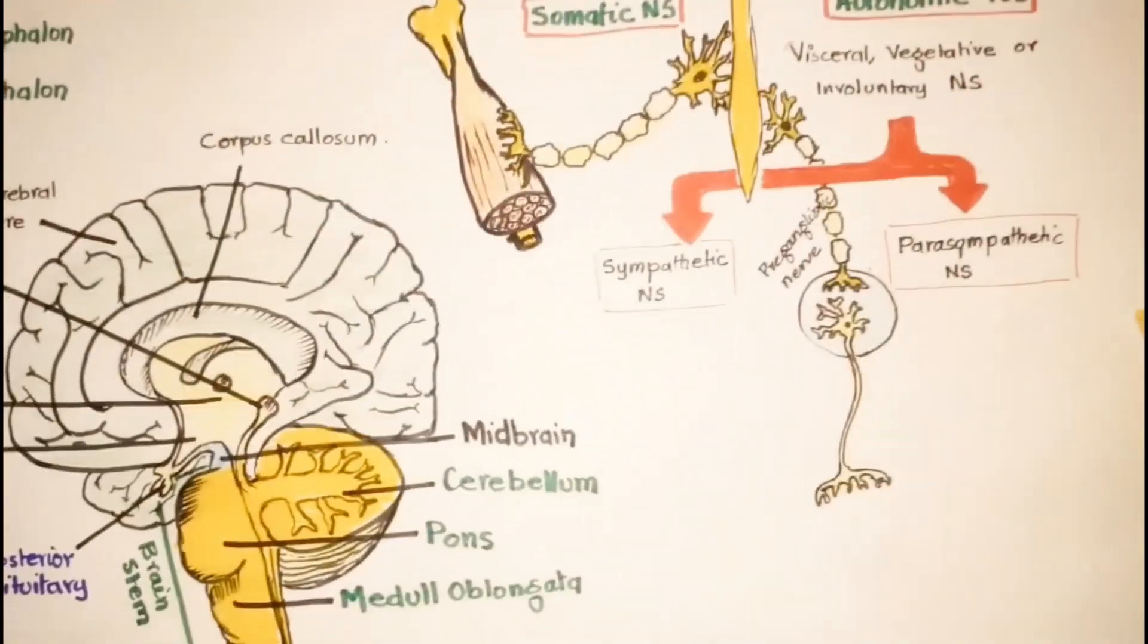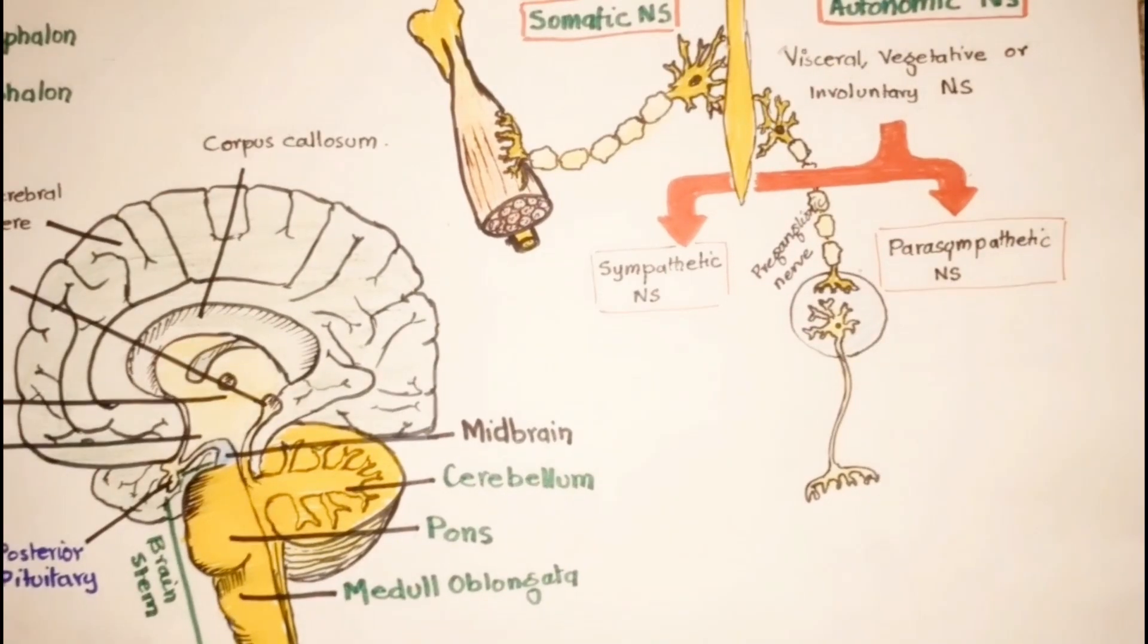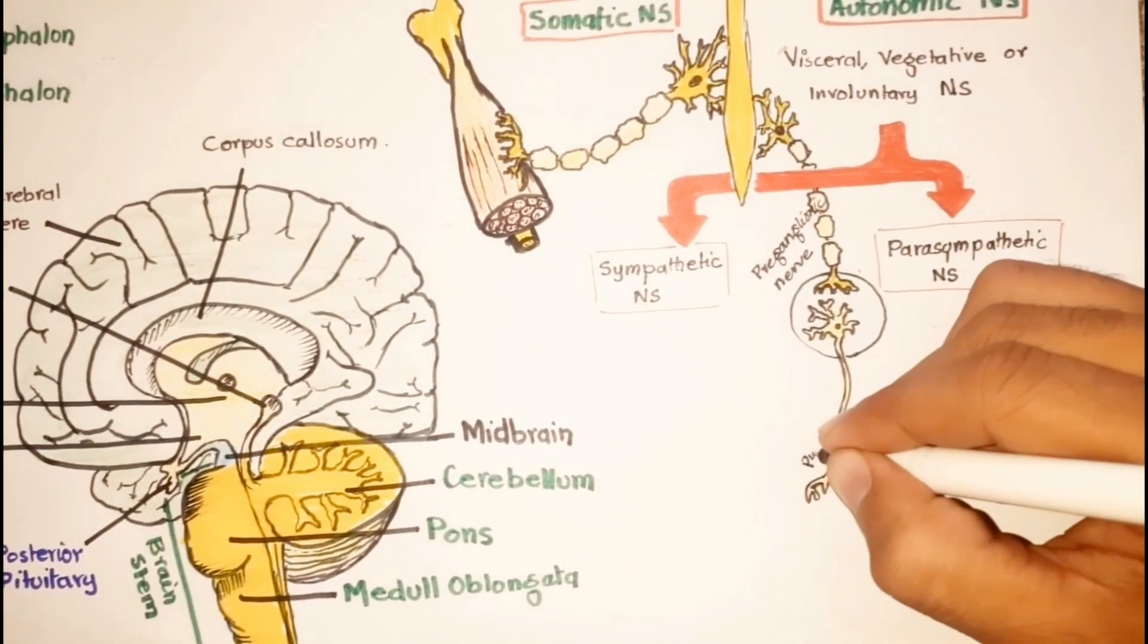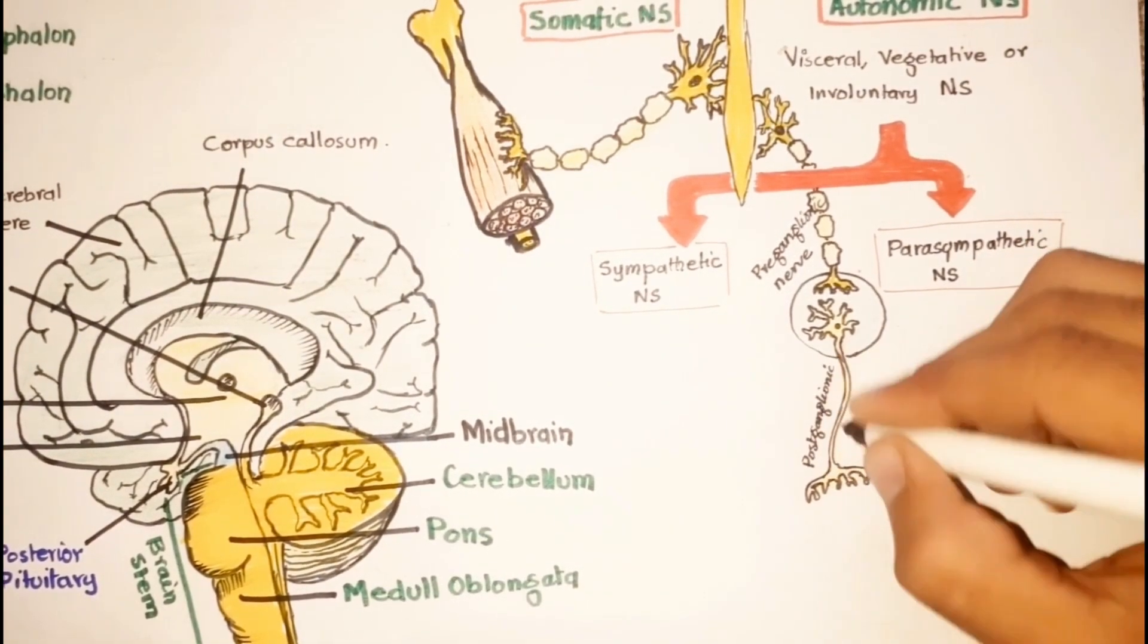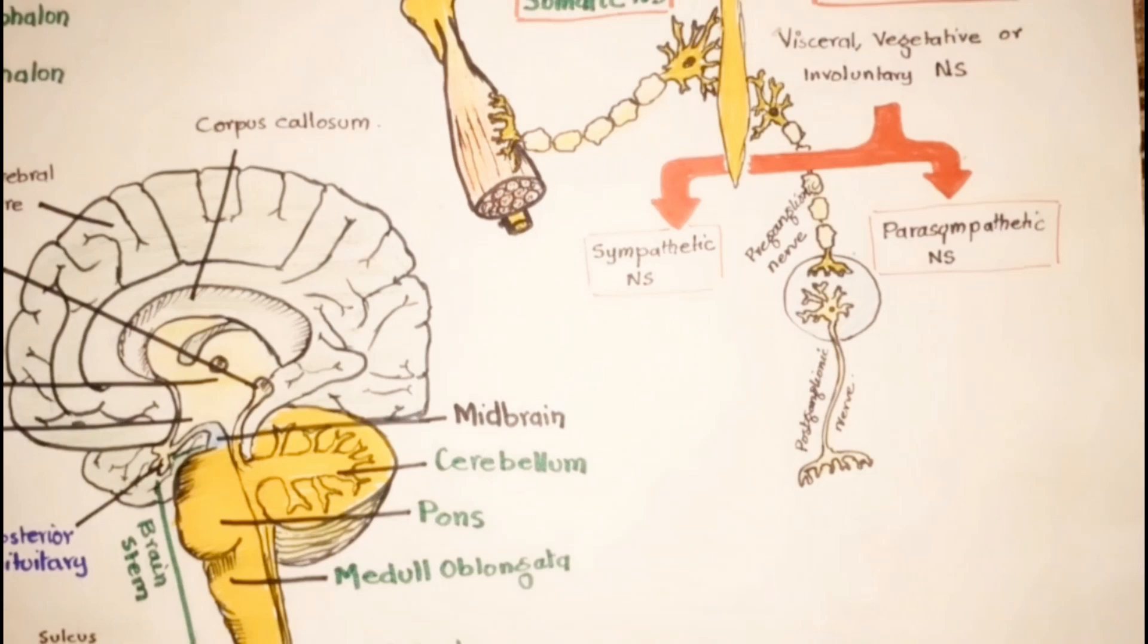The second nerve that ends in an organ or target tissue is called the postganglionic nerve, which is unmyelinated—it doesn't have the myelin sheath, as I'm drawing it here.